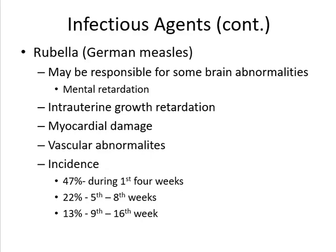Rubella may also be responsible for brain abnormalities and mental retardation, intrauterine growth retardation, myocardial damage, and vascular abnormalities. The incidence is around 47 percent during the first four weeks, reducing to around 22 percent if exposure occurs at five to eight weeks, and further reduced to 13 percent if exposure occurs during nine to sixteen weeks.